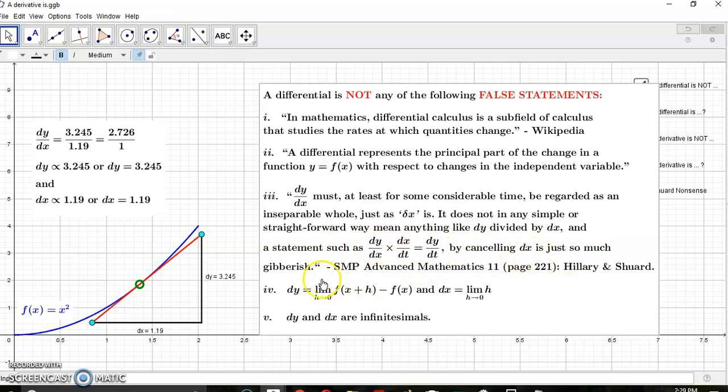A statement such as dy/dx times dx/dt equals dy/dt by cancelling dx is just so much gibberish. It turns out that the exact opposite of that is true. Hilary and Sheward were just two moronic English math academics who didn't understand mathematics, never mind calculus.